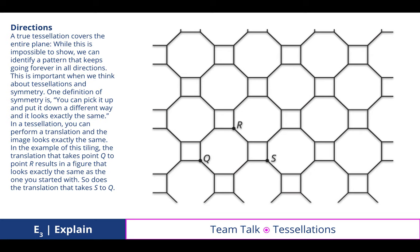A true tessellation covers the entire plane. While this is impossible to show, we can identify a pattern that keeps going forever in all directions. This is important when we think about tessellations and symmetry. One definition of symmetry is you can pick it up and put it down a different way, and it looks exactly the same. In a tessellation, you can perform a translation, and the image looks exactly the same.